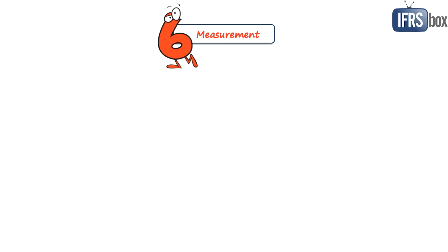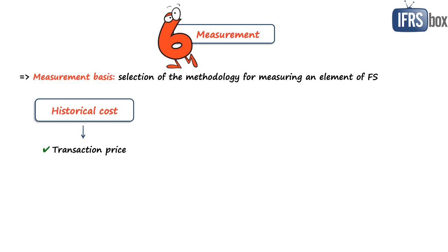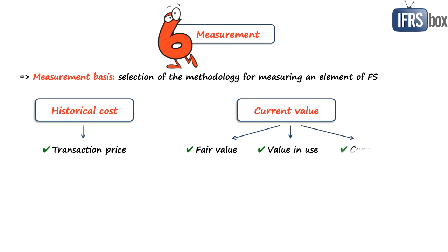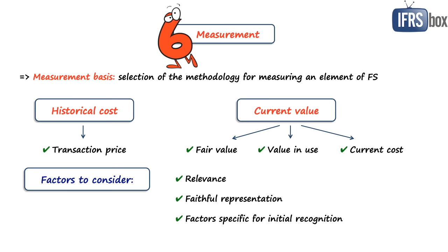Chapter 6 talks about measurement. While recognition addresses when or whether to recognize an element, measurement means in what amount to recognize — more specifically, the selection of a measurement basis, which is the way of measuring monetary amounts for elements of financial statements. The framework discusses two basic measurement bases: historical cost, which is essentially the transaction price at the time of recognition, and current value, which measures the element updated to reflect conditions at the measurement date and includes fair value, value in use and current cost. The framework also discusses factors for selecting the appropriate basis, with the most important being relevance and faithful representation of financial performance and position.